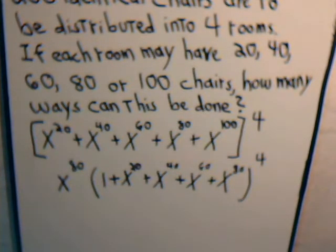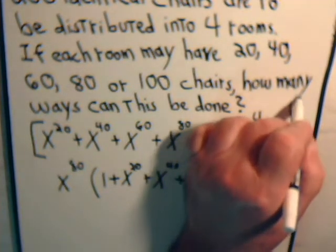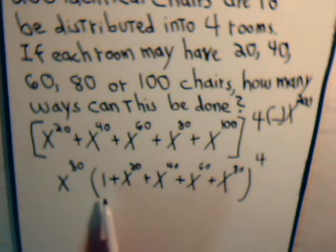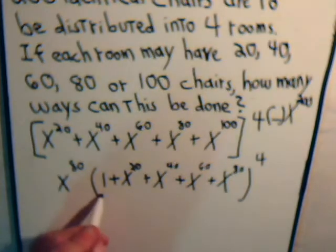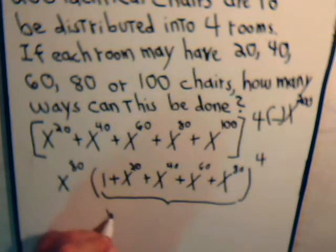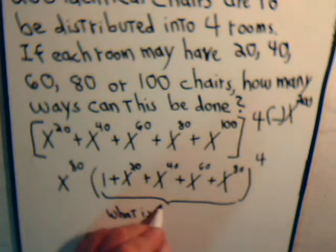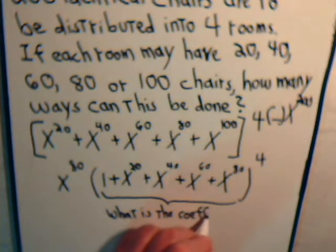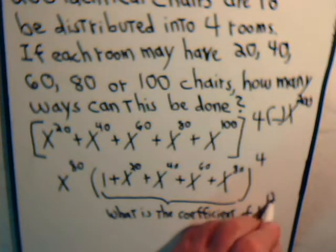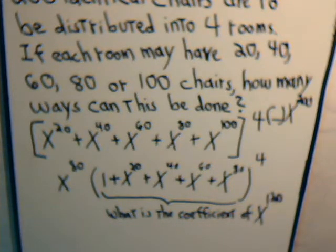We said we're interested in the coefficient of x to the 200. We've already factored out x to the 80, so in this expression we need to find the coefficient of x to the 120. So that now becomes our problem: if this bracketed expression is multiplied together 4 times, what is the coefficient of x to the 120?